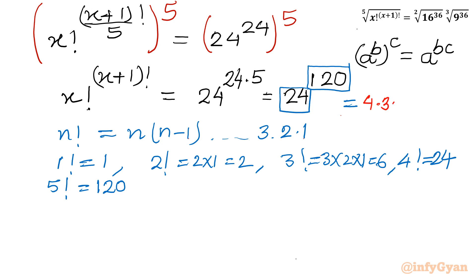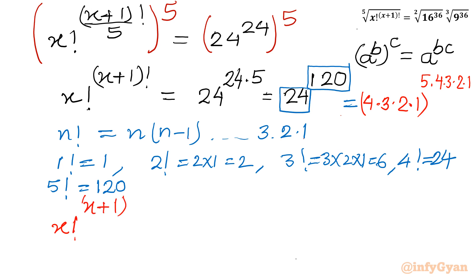So we can write 24 as 4 times 3 times 2 times 1, which is 4 factorial, and the power 120 as 5 times 4 times 3 times 2 times 1, which is 5 factorial. So the right hand side becomes 4 factorial raised to the power 5 factorial, which we can further write as 4 factorial raised to the power 4 plus 1 factorial.